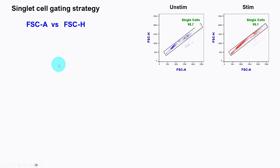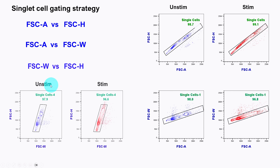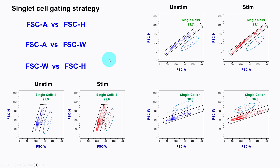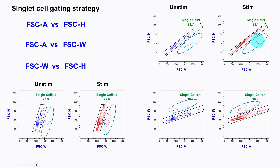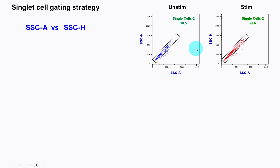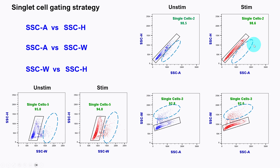You can also use FSC area versus FSC width, and FSC width versus FSC height, in both conditions. You can reverse these parameters — for example, FSC area versus FSC height or FSC height versus FSC area. Likewise, you can use the side scatter detector to discriminate singlets and doublets in a similar way, using SSC area versus height, area versus width, and width versus height. You can see the doublet cells in this strategy as well.